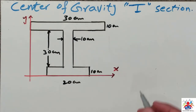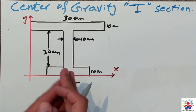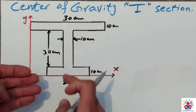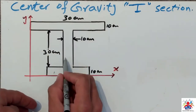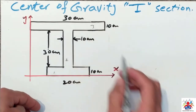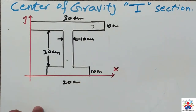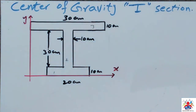Let's get started. First of all, we have to divide this section into three parts: part one, two, and three. We will calculate area one, area two, area three, then x1, x2, x3, y1, y2, y3. At the end we will calculate x-bar and y-bar to get the center of gravity point where our section is in equilibrium.